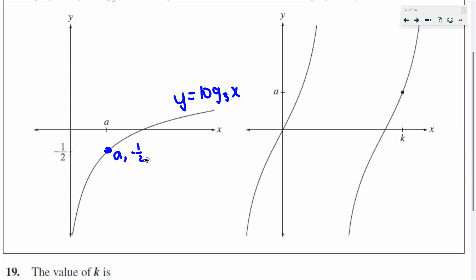So the first thing we need to do is figure out what A is. Since it's a point that passes through, it satisfies the equation. So Y is negative a half and X is A. So to solve for A, I'm going to switch from log form to exponential form. So I'm going to do base to the answer equals the argument. So to make my negative exponent positive, I will flip my base and switch the sign.